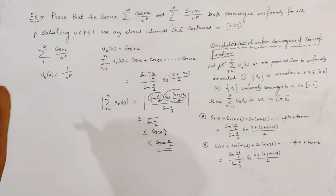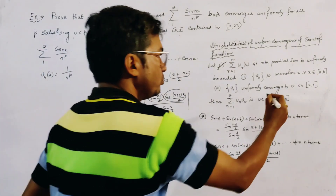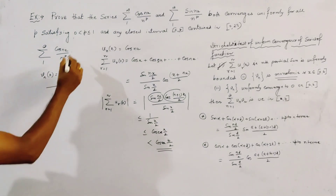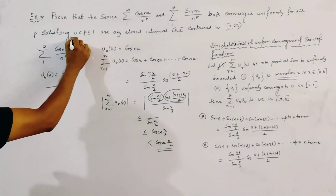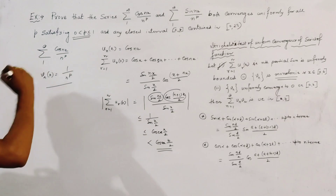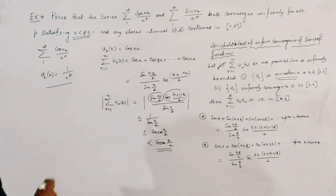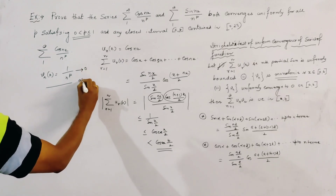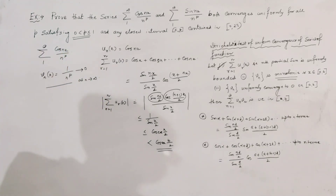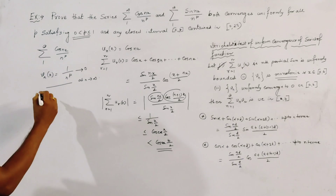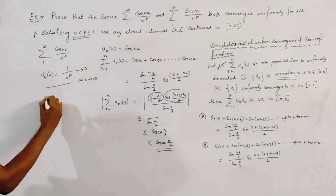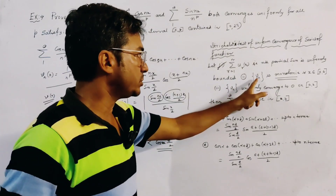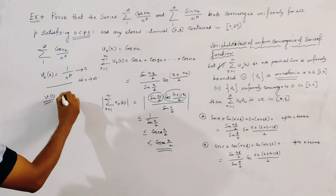This sequence of functions is clearly monotonic — monotonically decreasing — because p satisfies 0 < p ≤ 1, making it a monotonic decreasing sequence. Obviously this tends to 0 as n tends to infinity. So we get the limit function V(x) of the sequence v_n(x) is equal to 0.